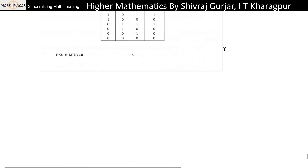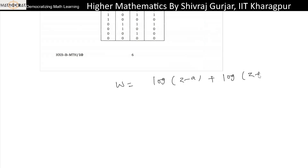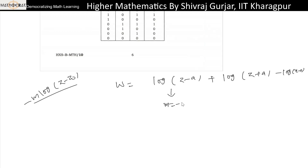So here we have w = log(z - a) + log(z + a) - log z, and z can be written as z - 0. Comparing with M·log(z - z-naught): here M means the coefficient, so compare — that is minus 1 here, here also M is minus 1, and here because of minus minus, M is 1. z-naught here is 0, here z-naught is minus a, here z-naught is a.